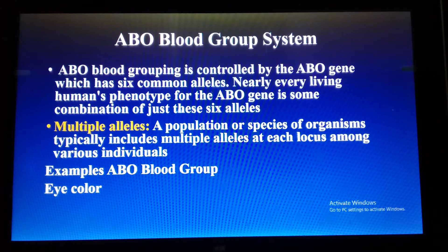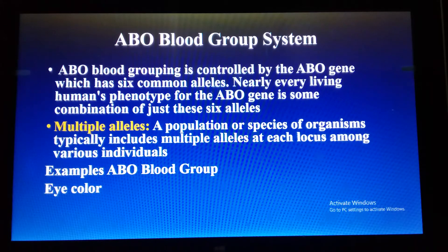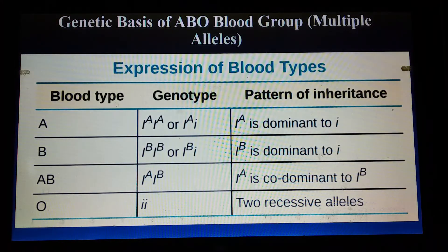The ABO blood group system is an example of multiple alleles. As I have told you, genes exist in pairs and mostly two alternate alleles are present at each locus on homologous chromosomes, but in this case there are more than two — commonly six alleles. In a multiple alleles system, you can further learn about other examples like eye color. Here I will show you how multiple alleles exist, which is the genetic basis of the ABO blood group system.